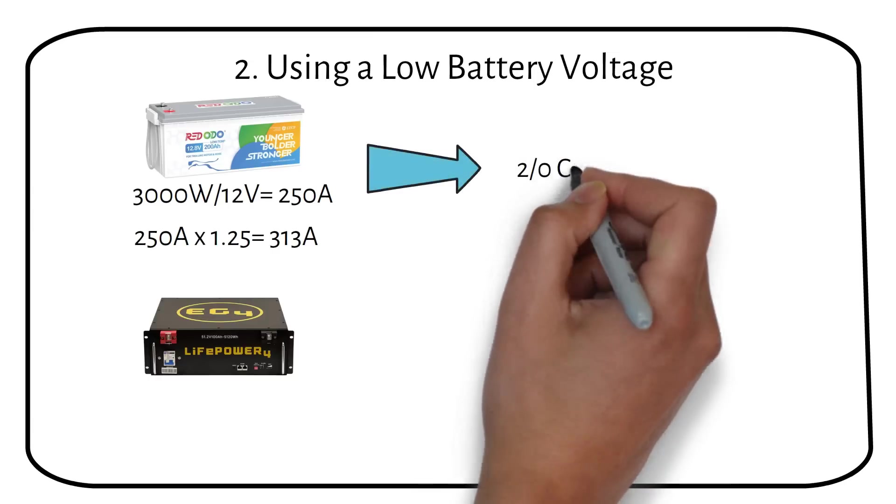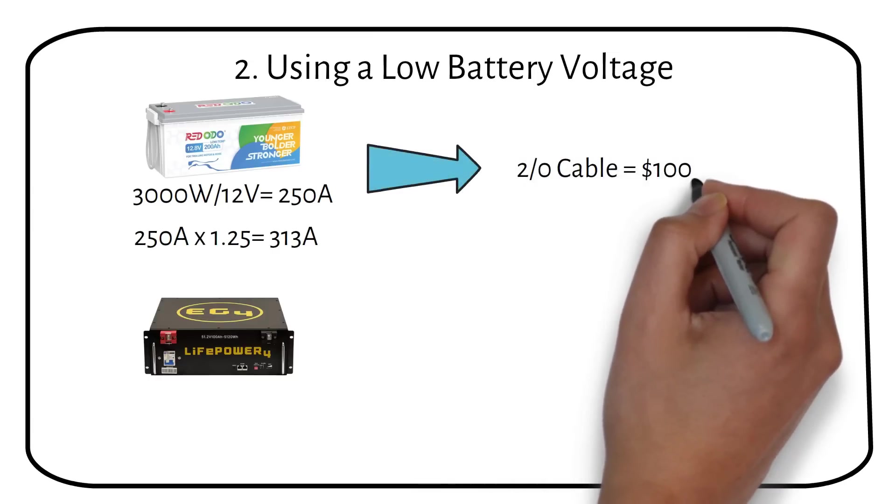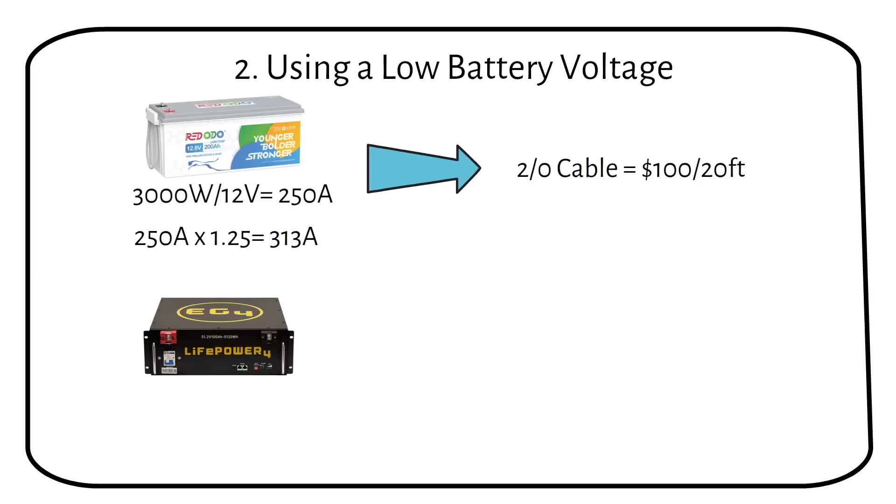You will need a 2/0 cable, which will cost you $100 for 20 feet. Switching to a 48 volt system reduces the current to 63 amps.